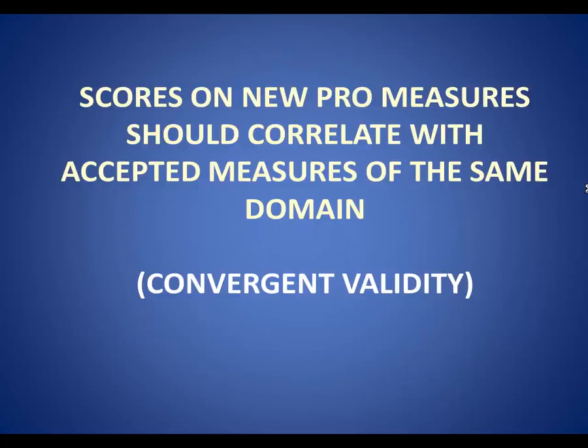There are different ways to assess validity. One way is to show that a new measure correlates with established measures of the same construct. This is known as convergent validity.